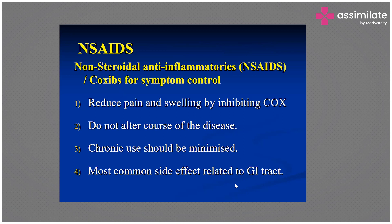For NSAIDs, examples of COX-2 inhibitors include celecoxib and etoricoxib. NSAIDs reduce pain and swelling but do not alter the course of the disease. Chronic use should be minimized as it can lead to kidney dysfunction, with the most common side effects related to the GI tract.